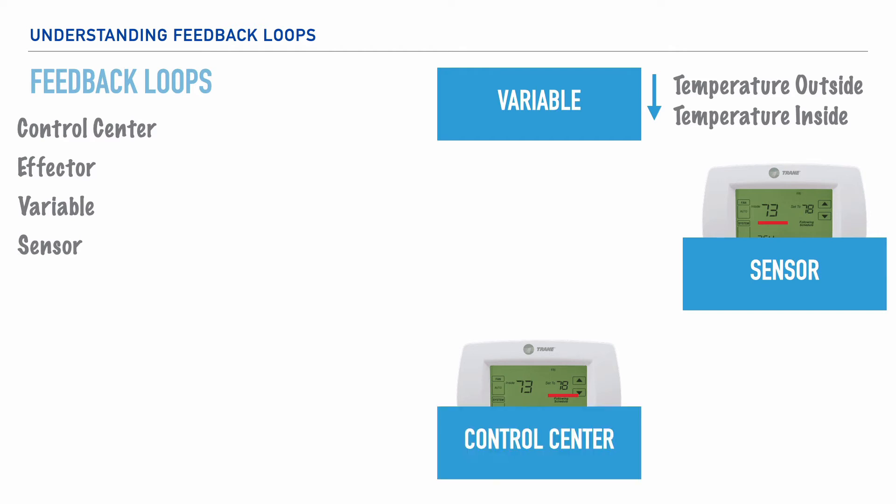So, this control center causes stimulation from an effector. And in this case, the effector would be a heating furnace or a heating element inside of the home that works to counteract the activity of the initial variable. And as a result, we'd have a gradual increase of the temperature.